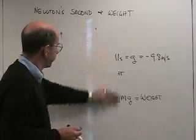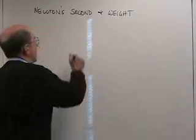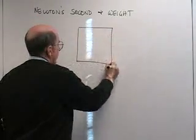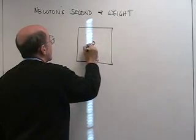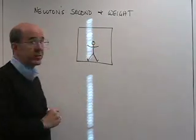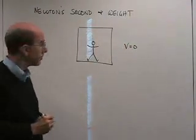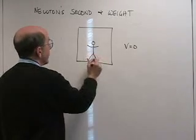Let's take a case of you standing in an elevator. So there's an elevator, there you are in the elevator, and let's start off with the velocity of the elevator equal to zero. So you're standing in the elevator, you have no acceleration.